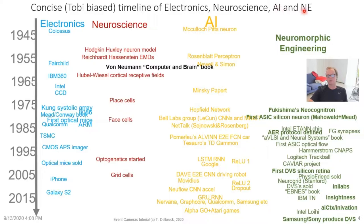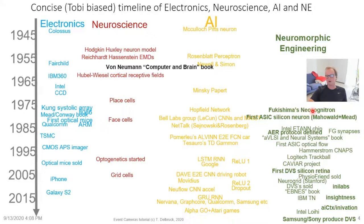Let's look at a concise timeline of electronics, neuroscience, artificial intelligence, and neuromorphic engineering from 1945 to 2015. Electronics started with the Colossus around World War II; neuroscience started with the Hodgkin-Huxley neuron model and discovered grid cells about a decade ago. Artificial intelligence started with McCulloch's neuron and progressed to AlphaGo and Atari games, with smartphones now including accelerators for feedforward convolutional neural networks. Neuromorphic engineering didn't start until the mid-1980s with Fukushima's Neocognitron and the first application-specific silicon neurons and silicon retina from Mahowald and Mead's group at Caltech.